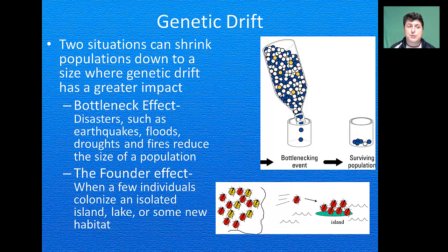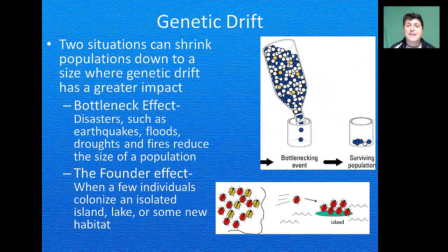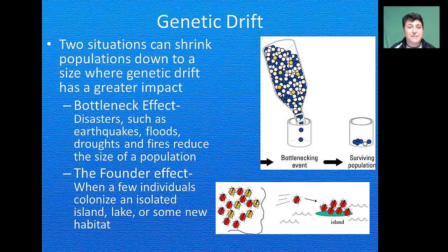The second situation that can shrink populations to a size where genetic drift may have a greater impact is the founder effect. The founder effect occurs when a few individuals colonize a new habitat. This new colony has a genetic makeup that is smaller and much more different in composition than the original population, so any small random changes that take place in this new population are going to be significant.